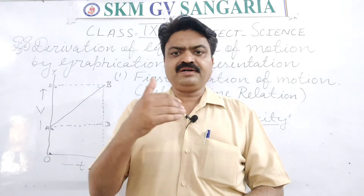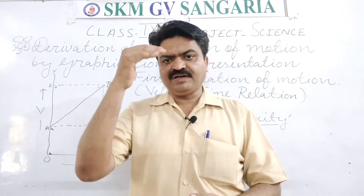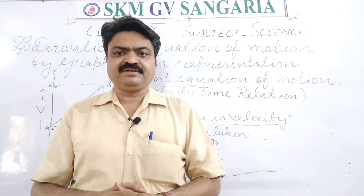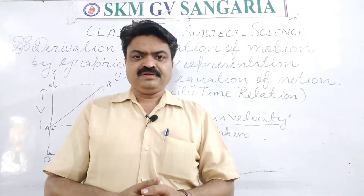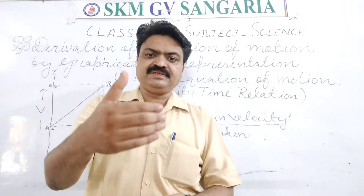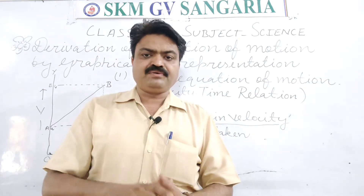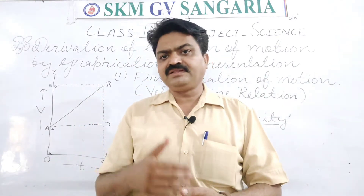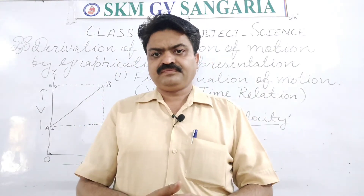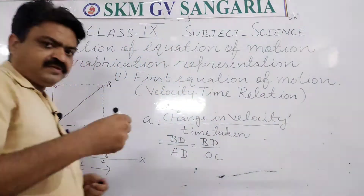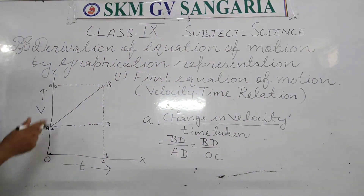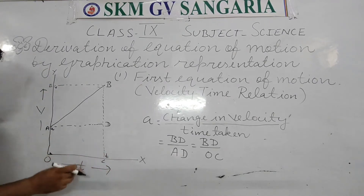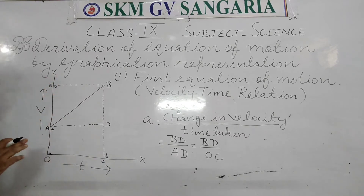First, we will draw the graph. In this graph, we will consider one automobile that is moving with uniform acceleration. That particular automobile has an initial velocity other than zero. I have drawn one graph. The x-axis represents time and the y-axis represents velocity.